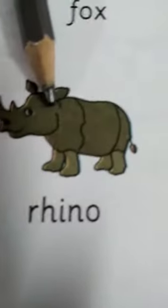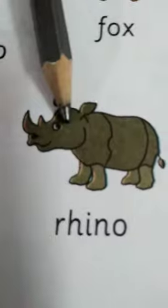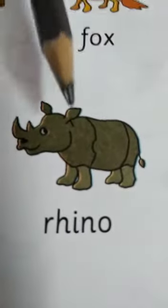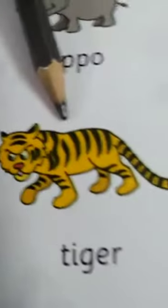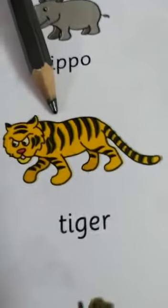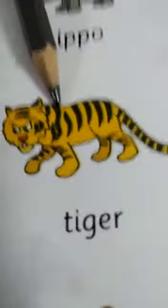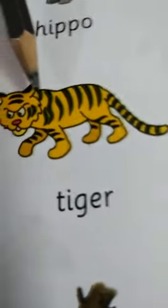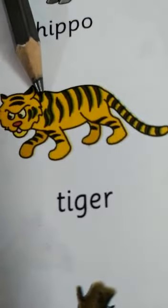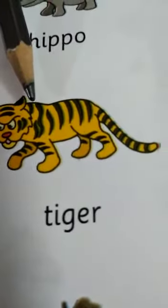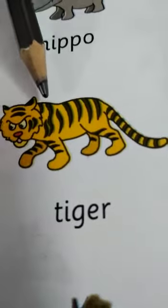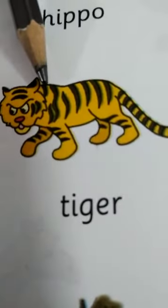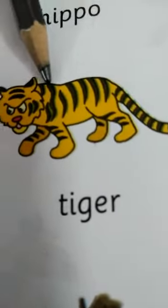Next, rhino. What is this? Rhino. It is a wild animal. It lives in jungle or forest. Tiger. This is tiger. It is a wild animal. It lives in forest or jungle. Tiger is the national animal of our India.